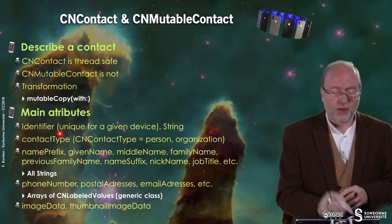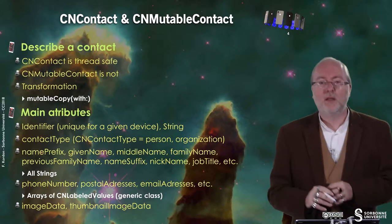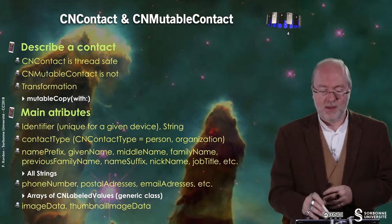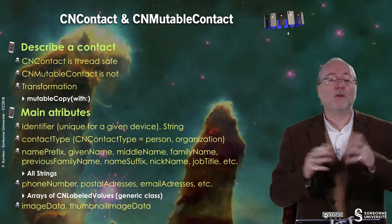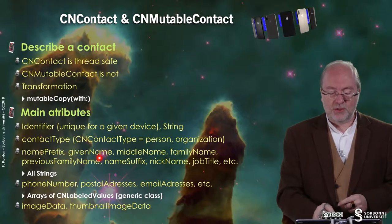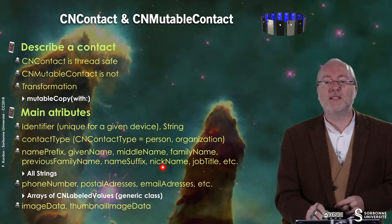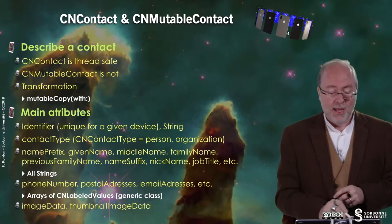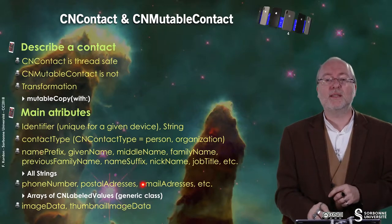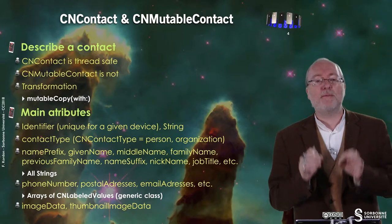CNContact has several attributes shared by both classes. You have an identifier that is unique for a given device — it's a string. You have a contact type of CNContactType that states whether it's a person or an organization. You have various strings like name prefix, given name, middle name, family name, previous family name, name suffix, nickname, job title, etc. Then you have phone numbers, postal addresses, and email addresses. These are not strings — they are arrays of CNLabeledValues, a sort of generic class that describes an entity.